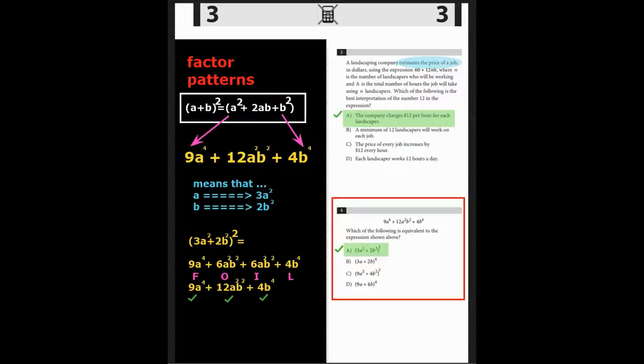then we'll have, using FOIL, 9a squared plus 6a squared b squared plus 6a squared b squared plus 4b to the 4th, which will be 9a to the 4th plus 12 of those a squared b squared plus 4b to the 4th. And that is the correct scaling for this factor pattern. The correct answer is A. 3a squared plus 2b squared, which is then squared, is equivalent to the equation above.